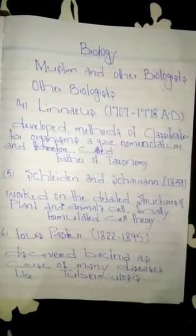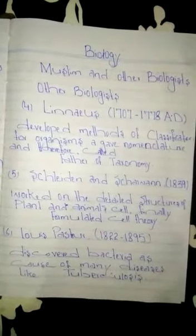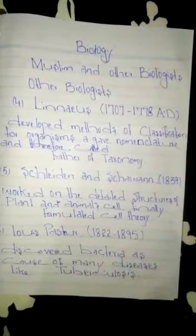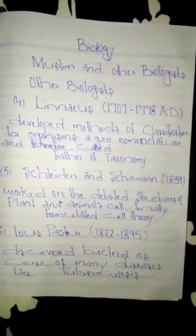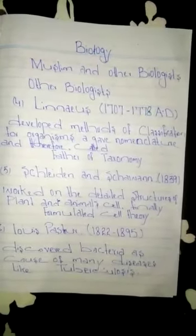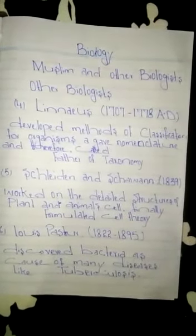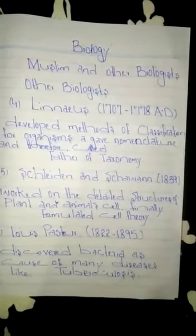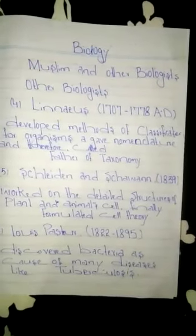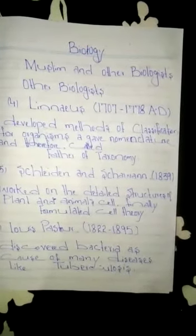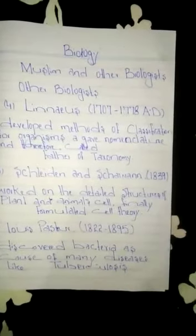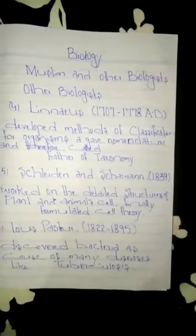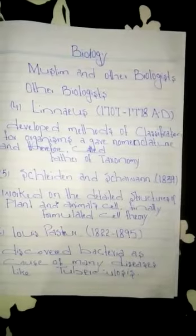Number 5, 1839: worked on the detailed structures of plant and animal cells, and finally formulated the cell theory covering plants and animals.